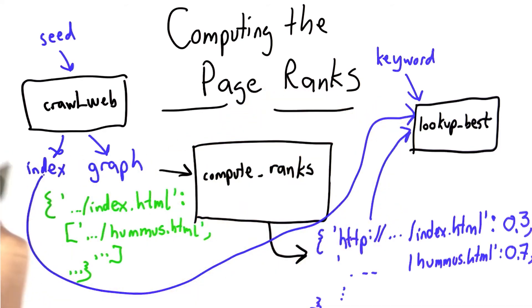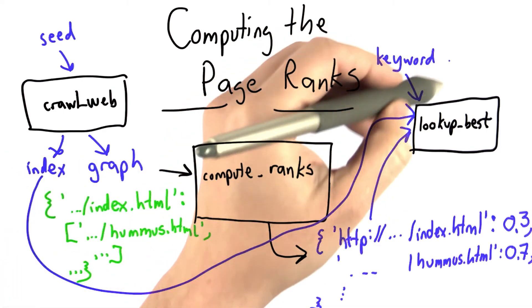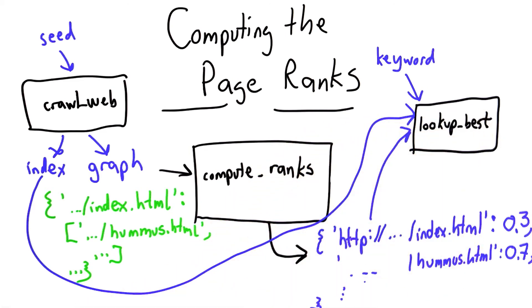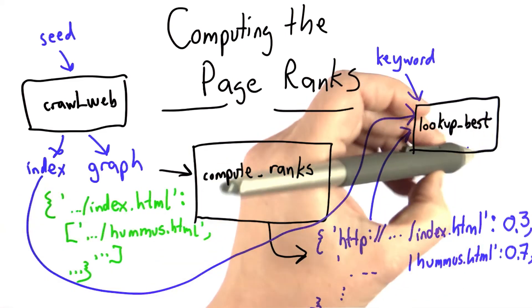From those three inputs, the index will give us all the pages that contain the keyword. Then what lookup_best will do is use the ranks to find the highest ranked page and give that as the output.